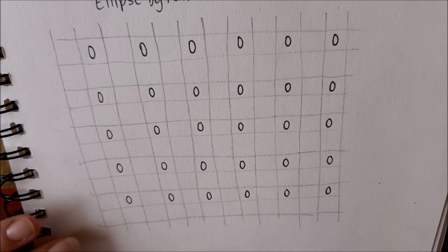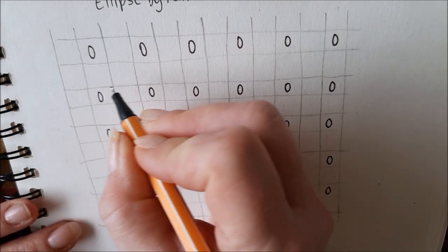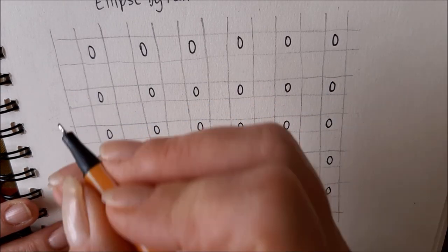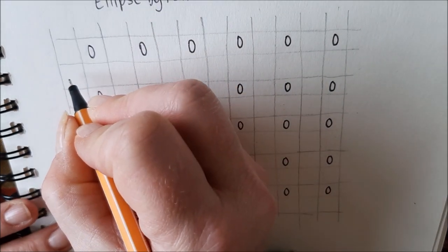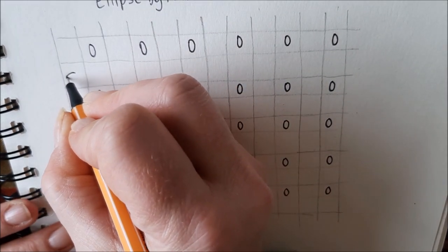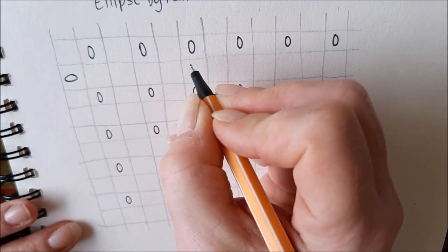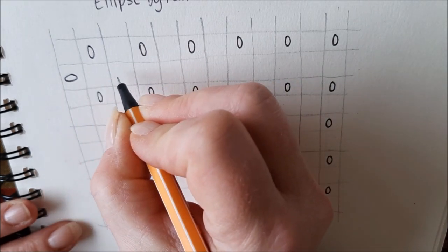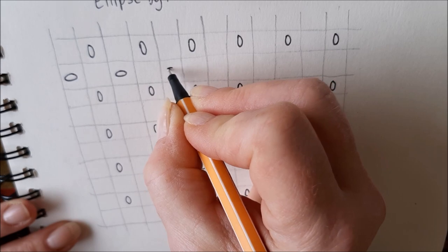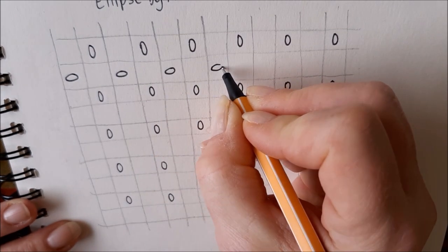Next step is again to draw ovals on the rows we just skipped. So in the first block draw an oval horizontal. Skip this block, skip this block and so on.